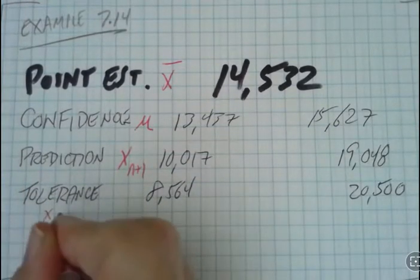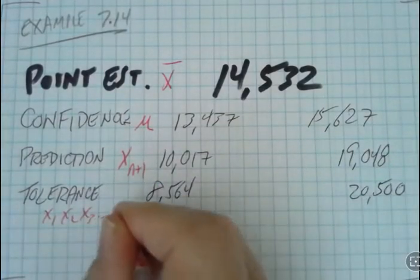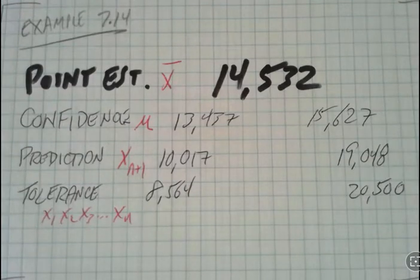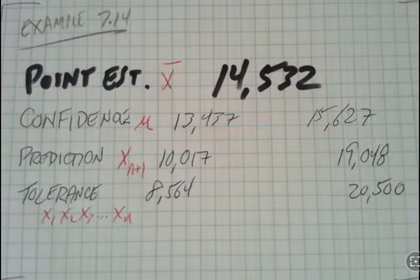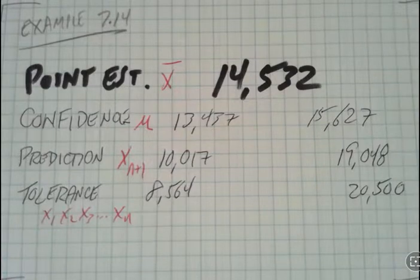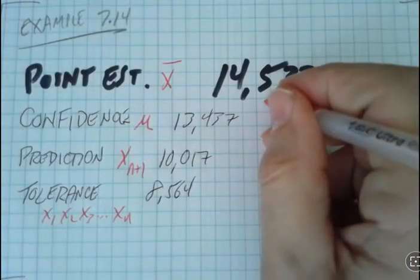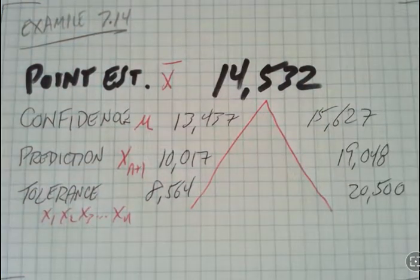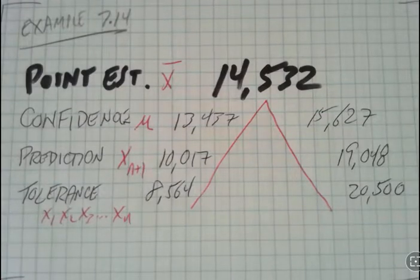So x1, x2, x3, dot dot dot to x sub n. I'm making predictions about what percent of all of my observations will fall within a certain range. Those observations got averaged in my sample, so the point estimate was a narrowing to the average. If you look at this basic curve, you see that you've got increased variability as you go through all of this data, but they serve different purposes.